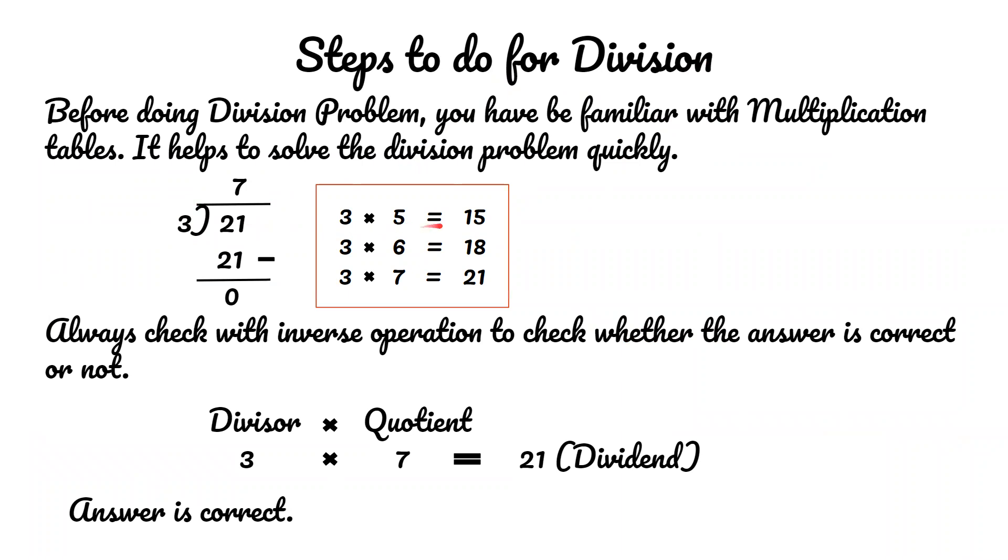3 times 5 equals 15, 3 times 6 equals 18, 3 times 7 equals 21. So we found the dividend value 21, which means the quotient is 7. The answer is 7 with quotient 7 and remainder 0.